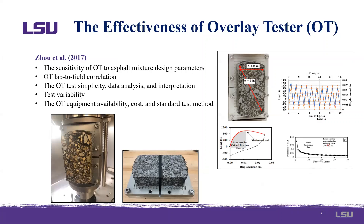The overall effectiveness of the overlay tester as a reliable device to study reflective cracking in the laboratory will now be discussed. Zhu et al. suggested that various aspects of equipment should be critically examined to identify it as a reliable cracking test setup. In this study, the effectiveness has been evaluated based on aspects including sensitivity to mixture design parameters, laboratory-to-field correlation, simplicity of the test in terms of specimen preparation, testing time, data analysis and interpretation, equipment availability, cost, availability of the test standard, and test variability and repeatability.